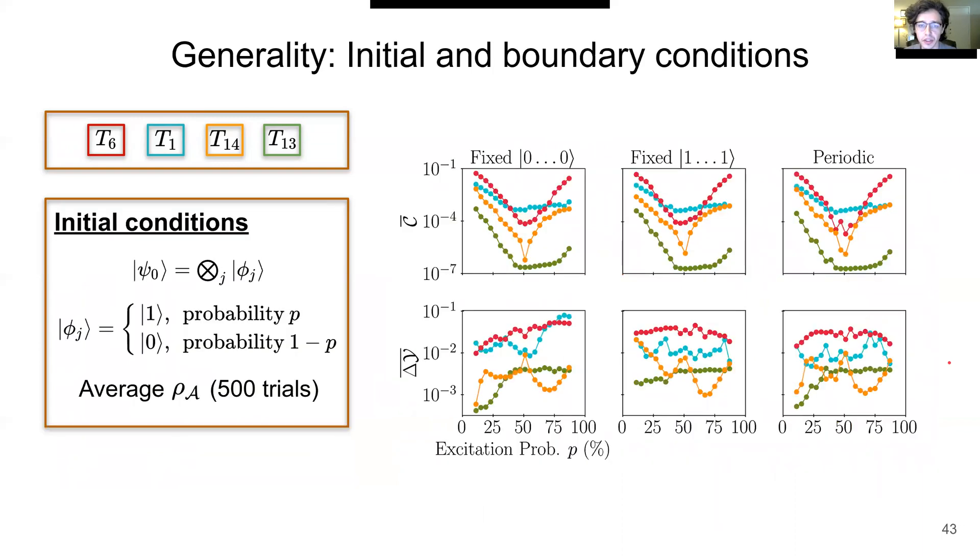Additionally, we can show our results are generalized to various initial and boundary conditions. Each column of this figure reports on a different boundary condition: boundaries fixed to 0, as we've been discussing, boundaries fixed to 1s in the middle, and periodic boundary conditions on the farthest right column.